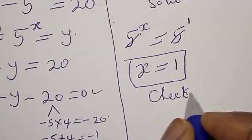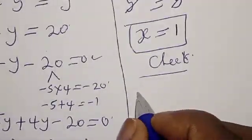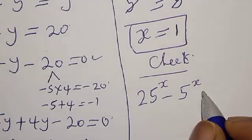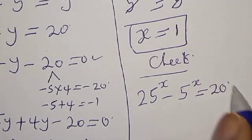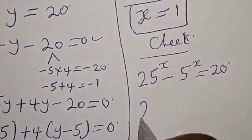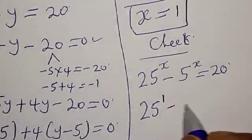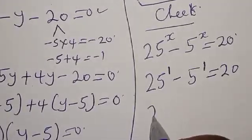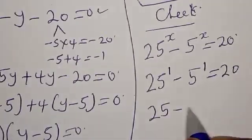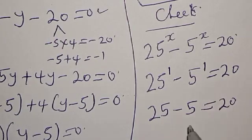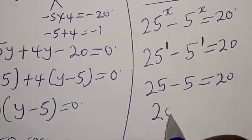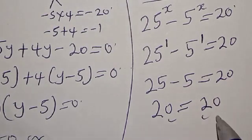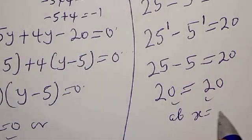Now let's check to confirm if our answer is correct. We have the given equation: 25 raised to power x minus 5 raised to power x equals 20. With x equals 1: 25 raised to power 1 minus 5 raised to power 1 equals 25 minus 5, which equals 20. The left hand side equals the right hand side, which satisfies the equation at x equals 1.